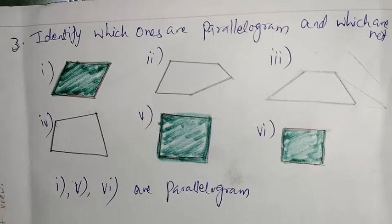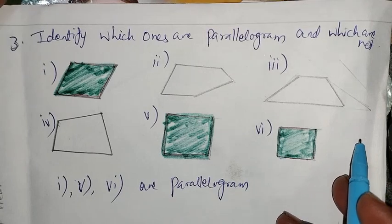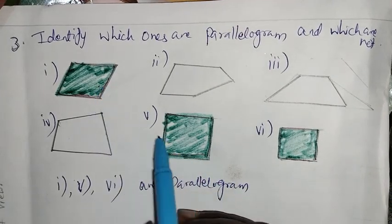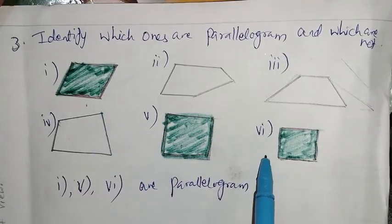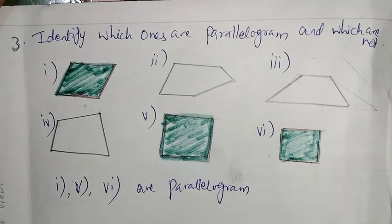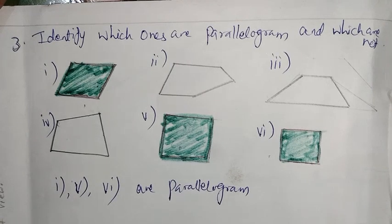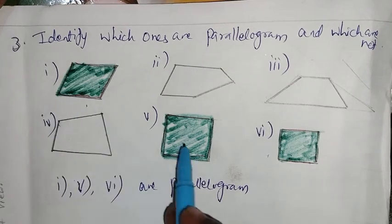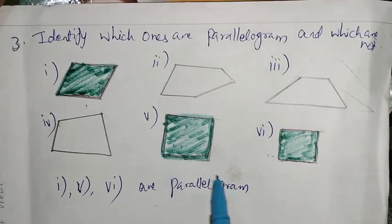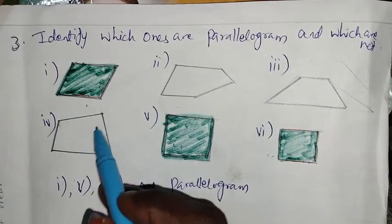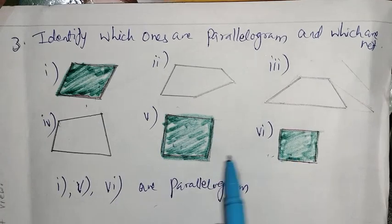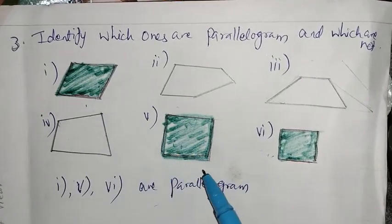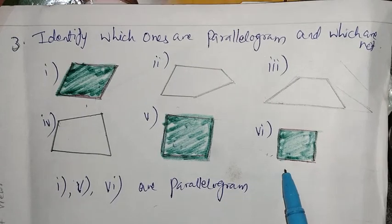Third one: Identify which ones are parallelograms and which are not. Square is a parallelogram. The first, fifth, and sixth ones are parallelograms, as all sides are equal and opposite sides are parallel.